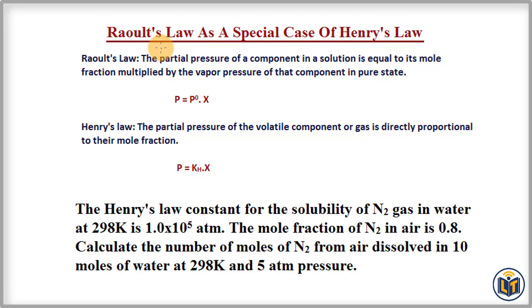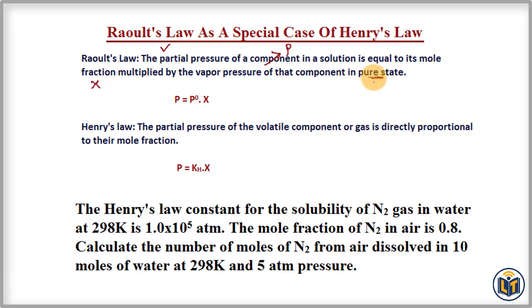Before we understand Raoult's law as a special case of Henry's law, we need to understand both laws and then compare them. Raoult's law states that the partial pressure of a component in a solution is equal to its mole fraction multiplied by the vapor pressure of that component in its pure state. If the vapor pressure of the component in solution is P, the mole fraction is X, and the vapor pressure in pure state is P₀, then by Raoult's law: P = P₀ × X.